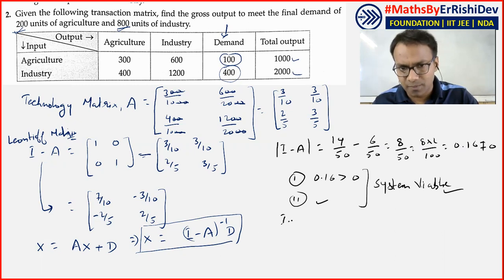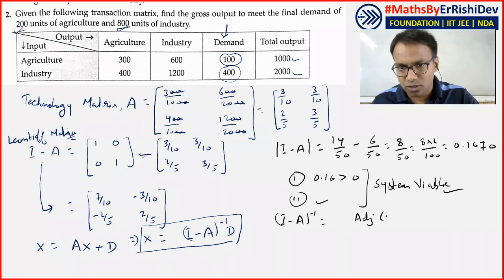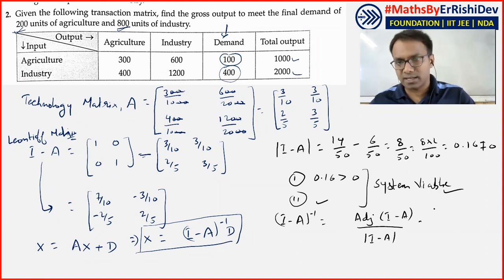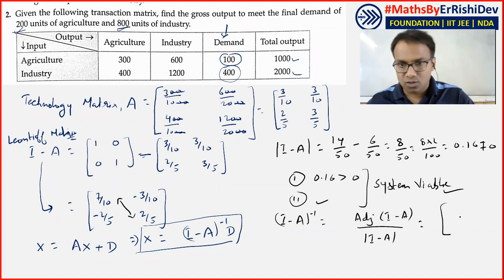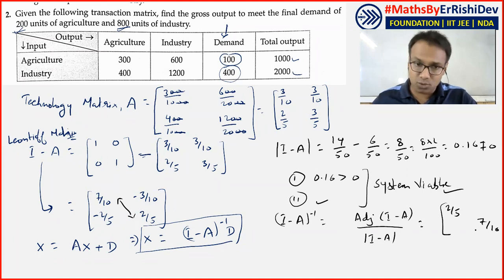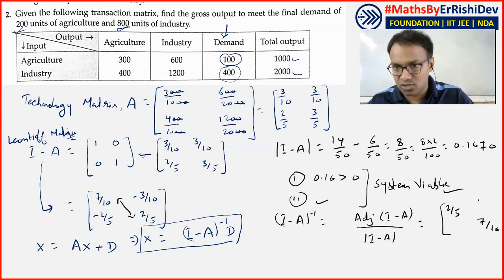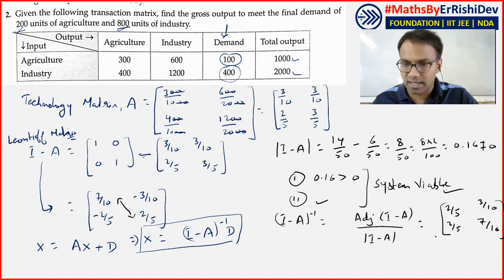Now to find the inverse of I minus A: inverse equals adjoint of (I-A) divided by determinant of (I-A). For a 2×2 matrix, the adjoint is found by interchanging diagonal elements — so 2/5 comes here and 7/10 goes to the other place — and reversing signs of off-diagonal elements: minus 3/10 becomes plus 3/10, and minus 2/5 becomes plus 2/5. Divided by 0.16, which equals 100/16.